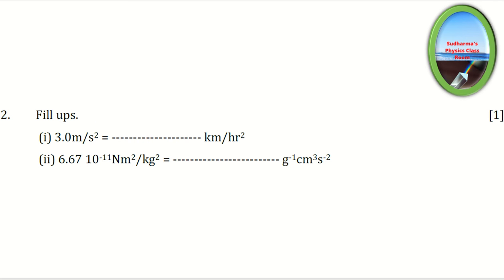Fill in the blanks. 3 m per second squared equals how many kilometers per hour squared? Also, 6.67 × 10⁻¹¹ Nm² per kg² equals how many in CGS units (per gram centimeter cube per second squared)? This is a unit conversion problem — Nm² per kg² converted to CGS.